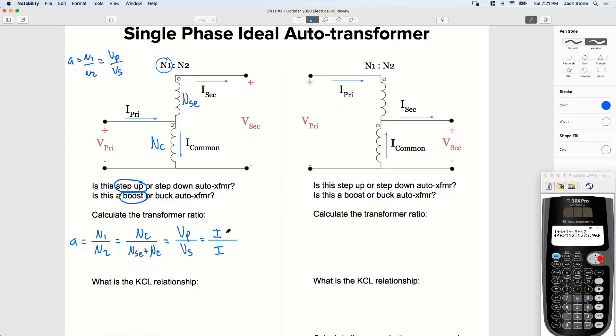So if I have my primary turns, my primary voltage, this is going to be my secondary current leaving my auto transformer right here. And if on the bottom I have my secondary number of turns, my secondary voltage, again, it's flip-flopped for current, this is going to be my primary current entering this transformer right here. See that?